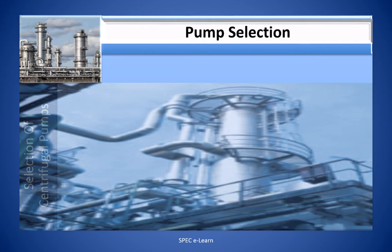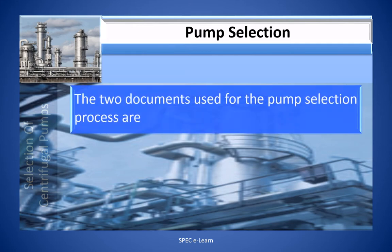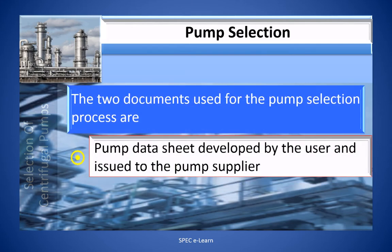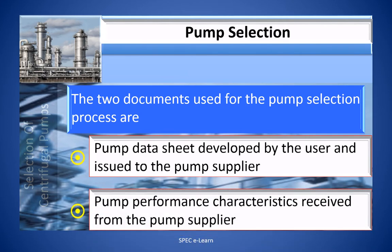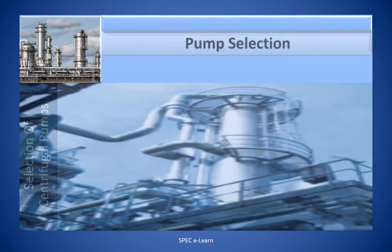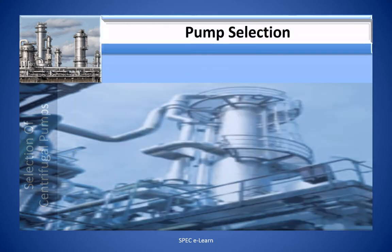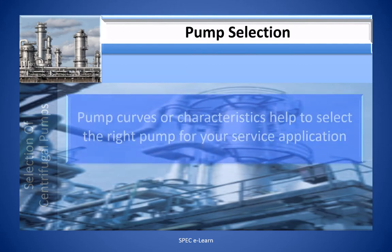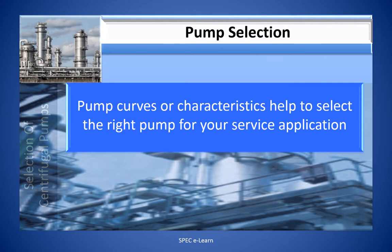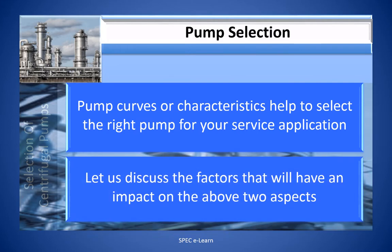The two documents used for the pump selection process are: the pump data sheet developed by the user and issued to the pump supplier, and the pump performance characteristics received from the pump supplier. Pump curves help to select the right pump for your service application.